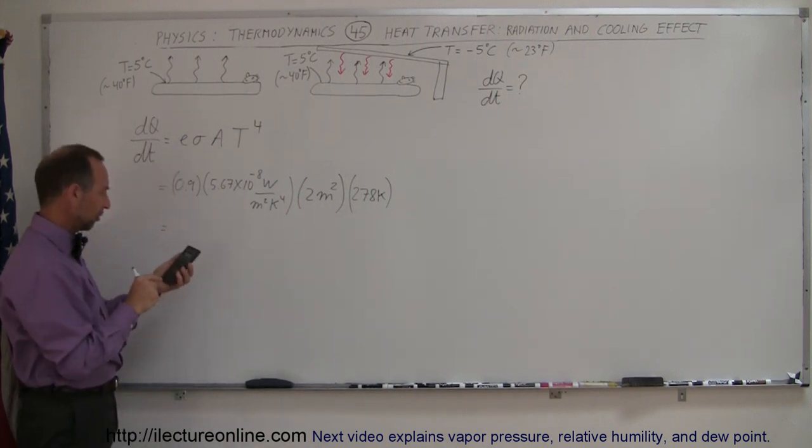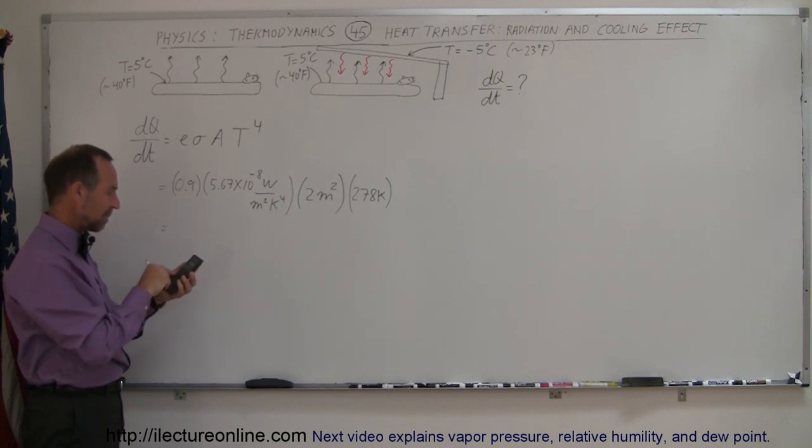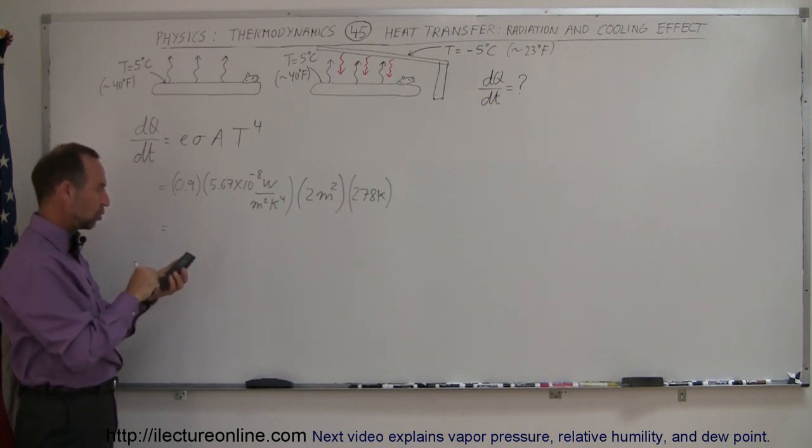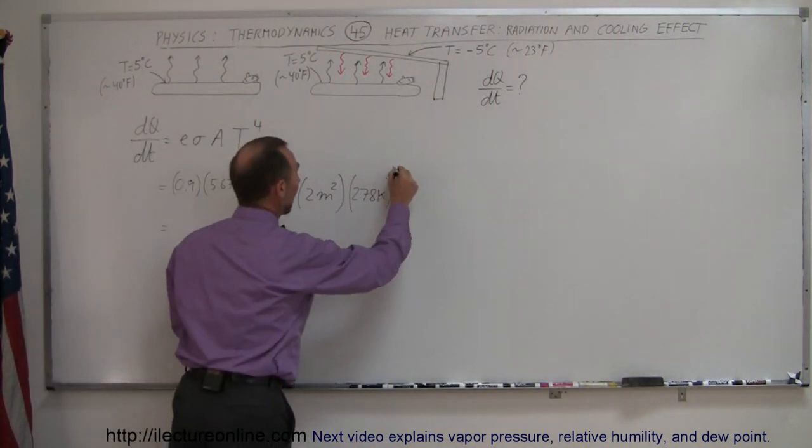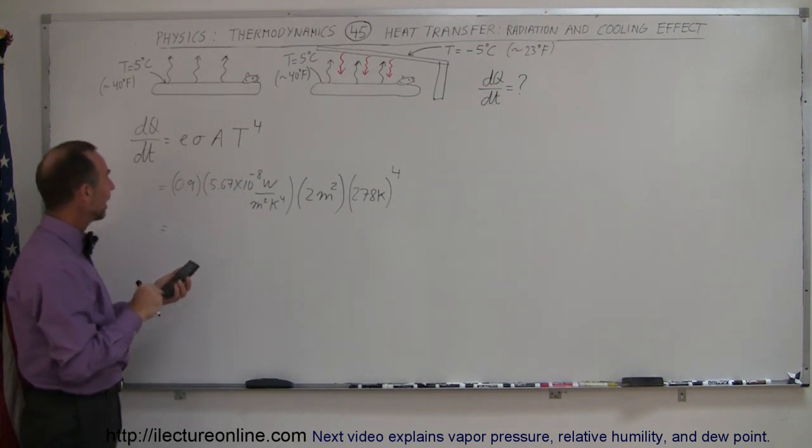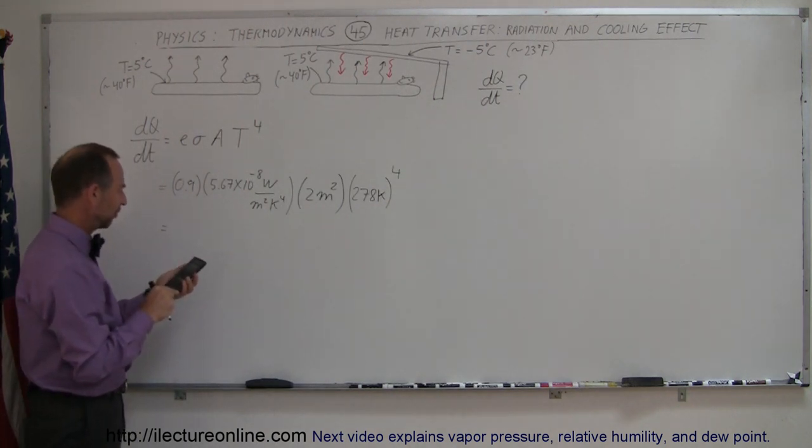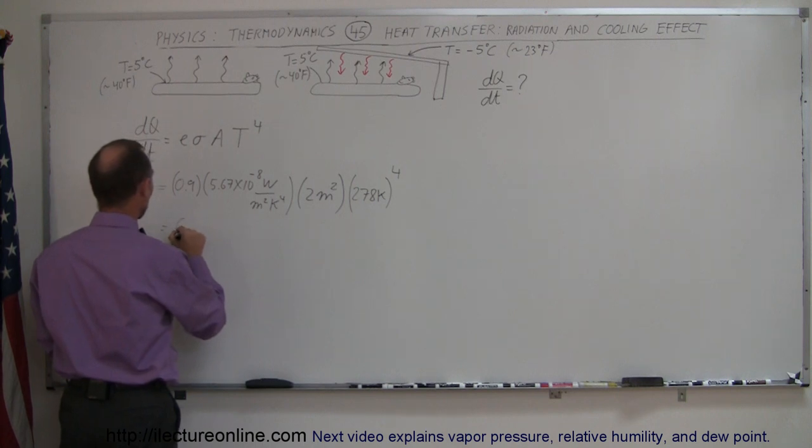Alright, so let's see what the numbers are here. So we have 0.9 times 5.67 e to the minus 8, times 2, and times 278, and of course we have to take that and raise it to the fourth power, we can't forget that, and so then we have 610 watts.